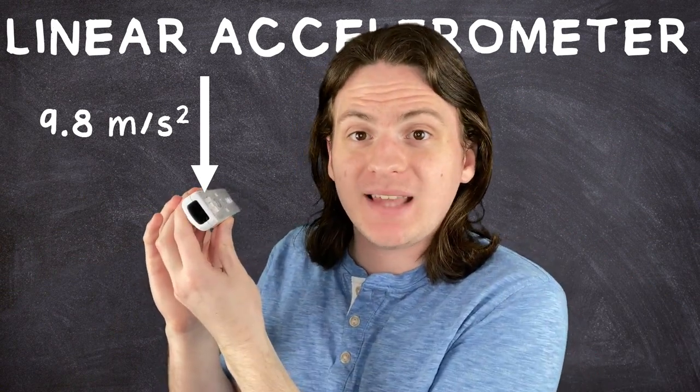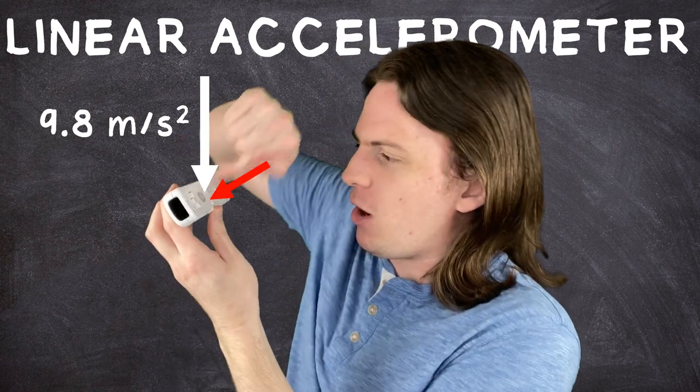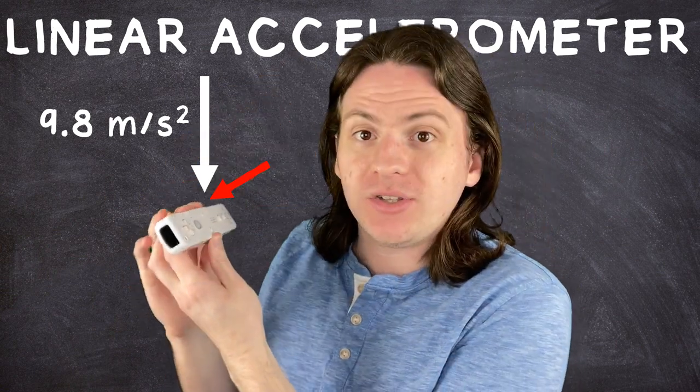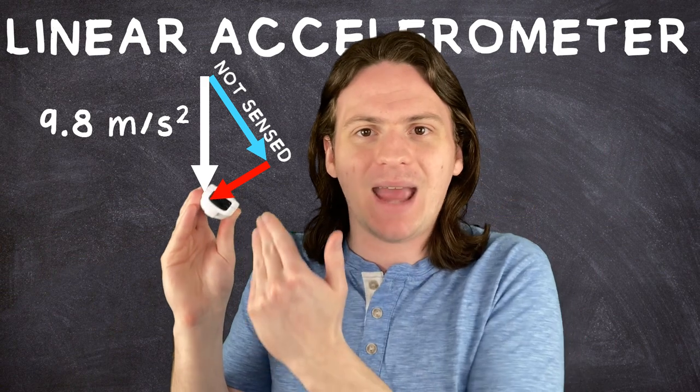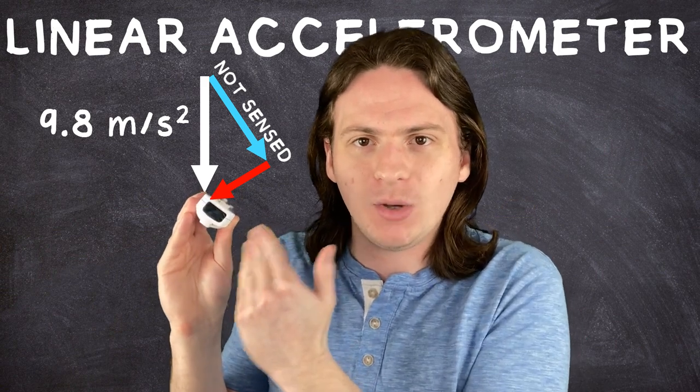It only senses forces that are perpendicular, that are coming right at it head on. So now, it's only getting a fraction of the force. If we know the acceleration is supposed to be 9.8 if it's perfectly flat, and we can measure what the force actually is with the change in capacitance, then with some more magic, I've come back around to it, we can figure out the exact angle that the Wii Remote is tilted at.